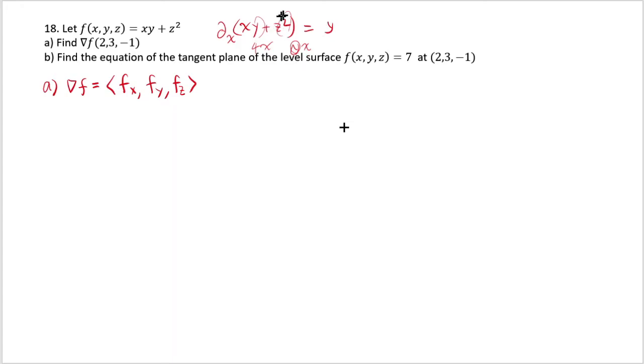And z squared, because z is a constant, z squared will be also treated as a constant when you do a partial derivative with respect to x. So that's going to give you 0. So first derivative by x would be just y.